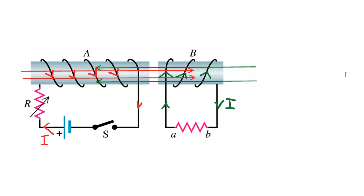What would happen if I suddenly opened the switch? Work this through, see if you can determine that the field will be to the right in solenoid B, and the induced current will be in the opposite direction.